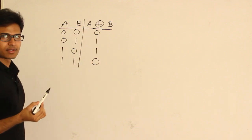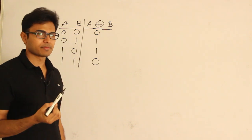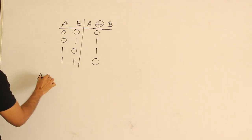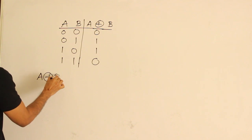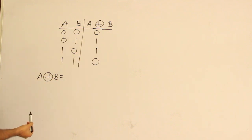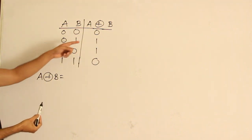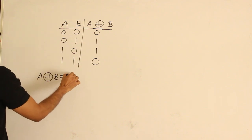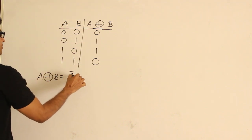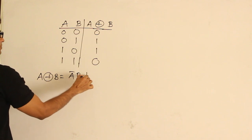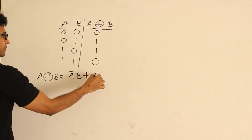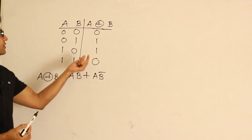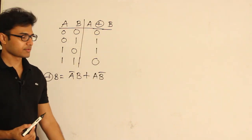It actually acts like modulo-2 sum. And how to represent it: there are 2 ones in the truth table. For these 2 ones, you take the 2 minterms. The first one is A'B and the second one is AB'. So Exclusive OR can be written as A'B + AB'.